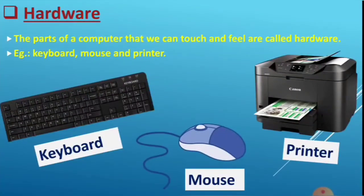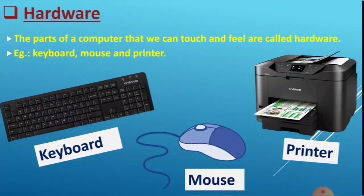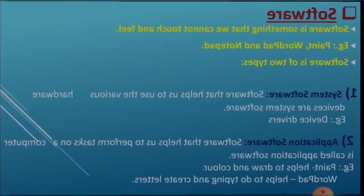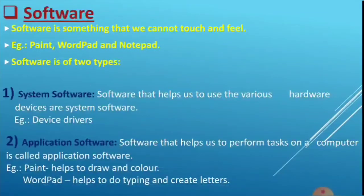Now let's talk about hardware. The parts of a computer that we can touch and feel are called hardware. For example, the keyboard, mouse, and printer are hardware devices — we can touch and feel these parts.